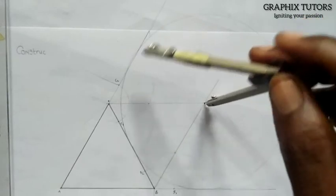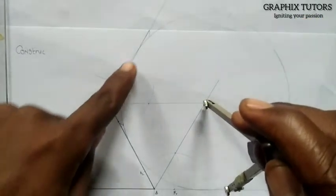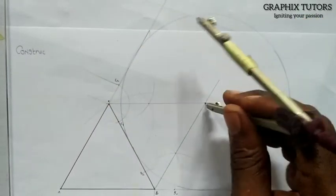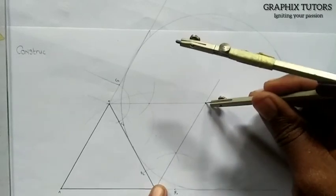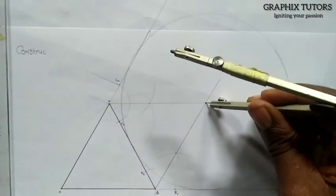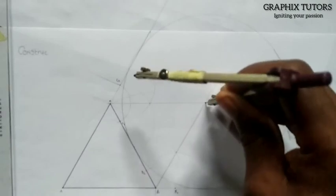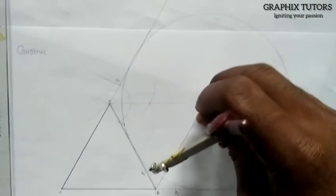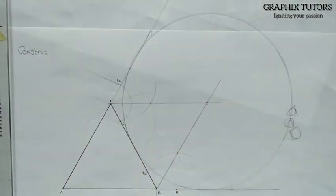It must be tangential to all the sides of the triangle. The lines must touch through and you must thicken it. So this is what we're talking about, the escribing circle of the triangle.